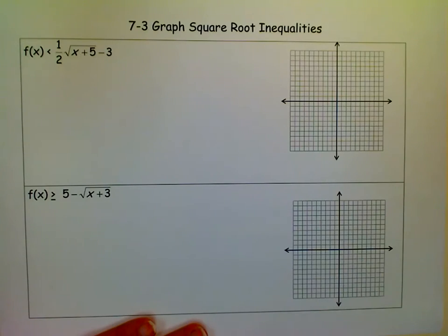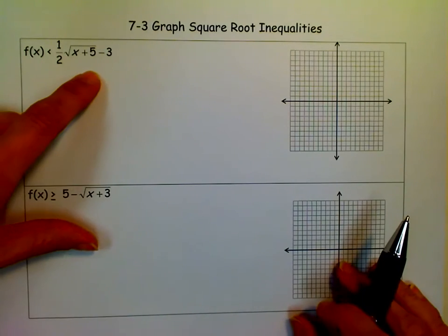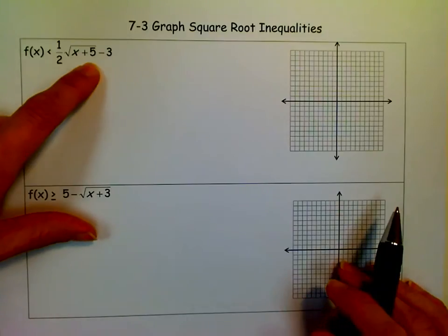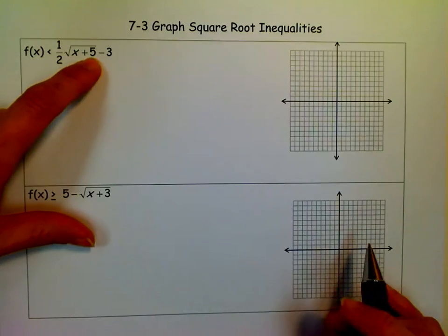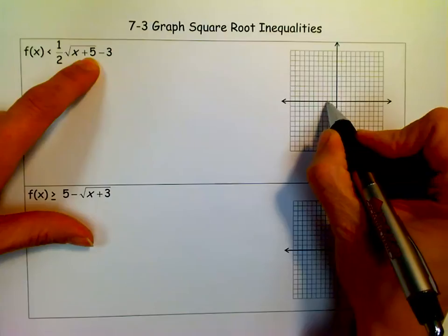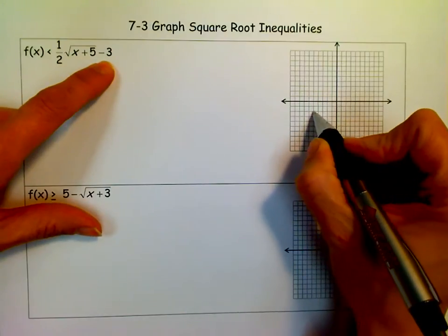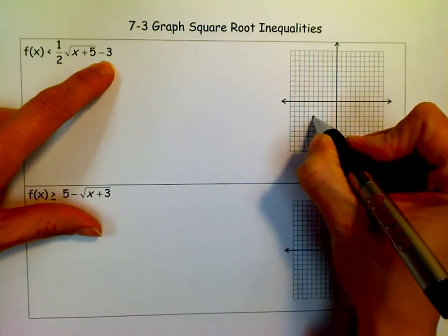So when we look at this, instead of making a chart or using my graphing calculator, I know that this is shifted left five and down three. So I know that's my starting point.